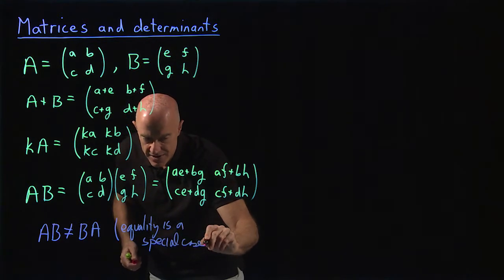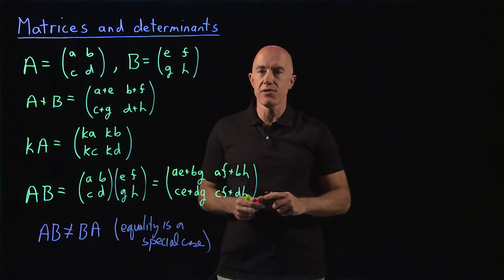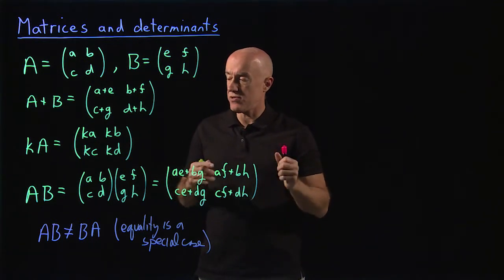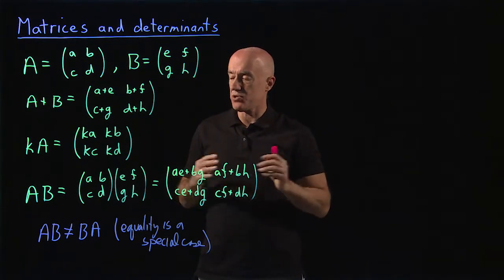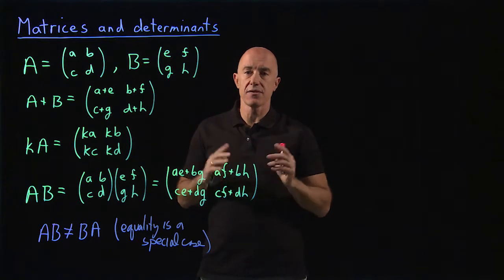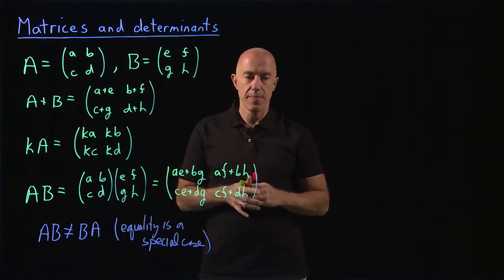An important thing to remember is that AB is not necessarily equal to BA. Equality is a special case. For the general two by two matrix, multiplication does not commute. Very important point.